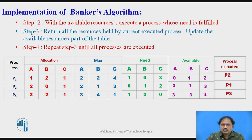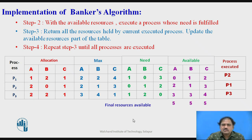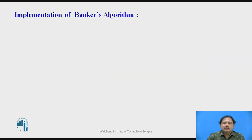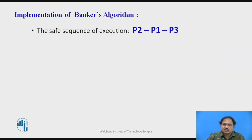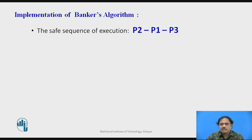We execute P3, and after P3 completes it also returns all resources back to the system. The final resources available become 5, 5, 5, which matches the total resources mentioned in the example. The safe sequence of execution from this example is P2, then P1, then P3.